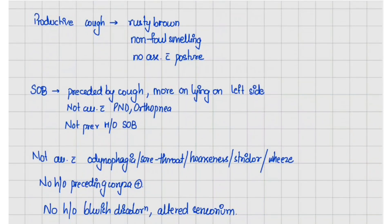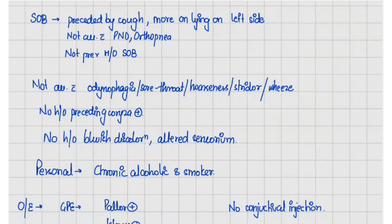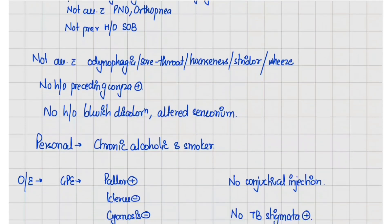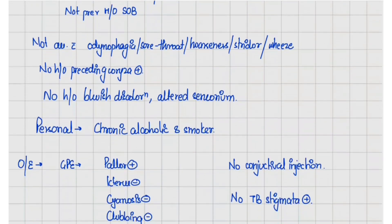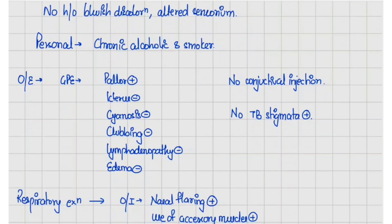There is no history of odynophagia, sore throat, hoarseness, stridor, or wheeze, and no history of preceding coryza. There is no history of bluish discoloration of skin and eyes, and no history of altered sensorium. On personal history, the patient is a chronic alcoholic and smoker.